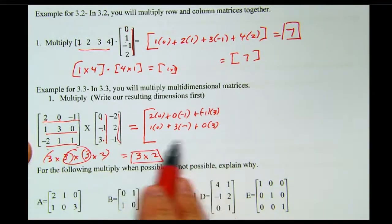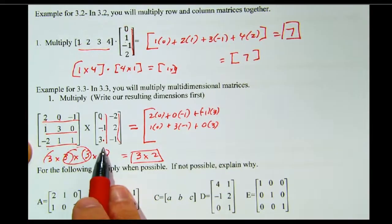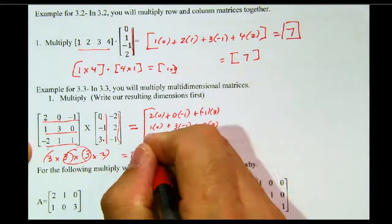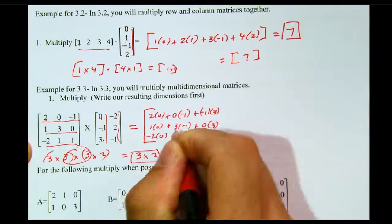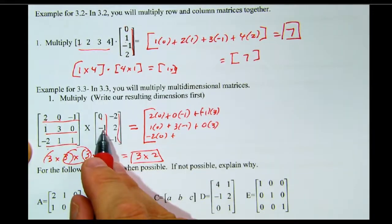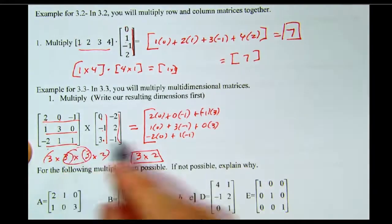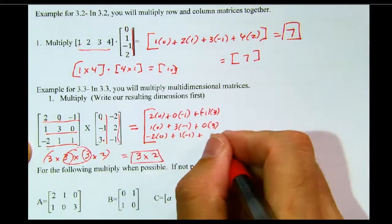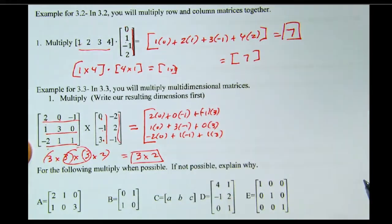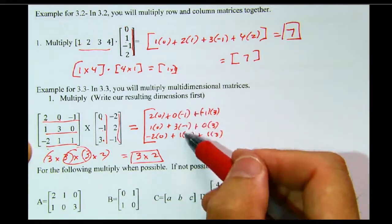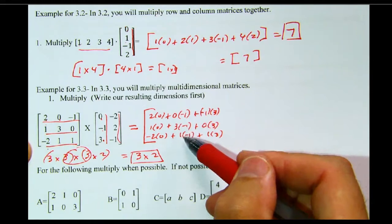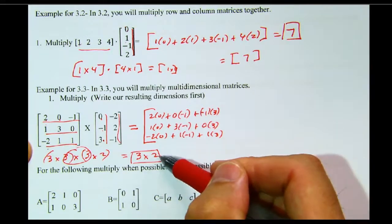Then to get the third row, first number, I use the third row, first column. So this would be negative 2, 0 plus 1 times negative 1 and then 1 times the 3. So this is just one column of my matrix for my 3 by 2.